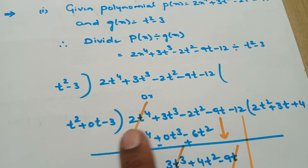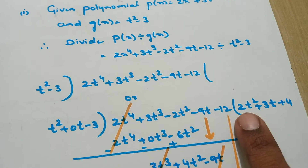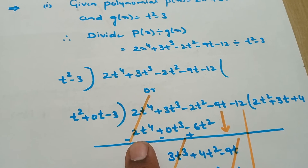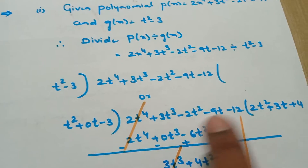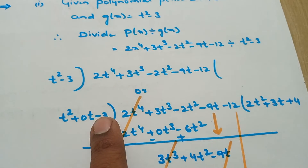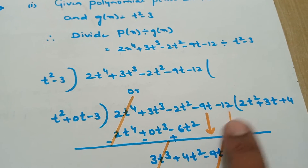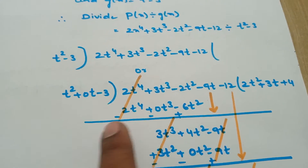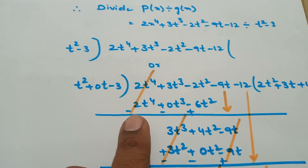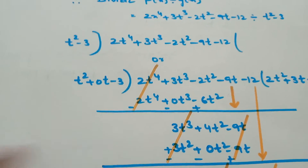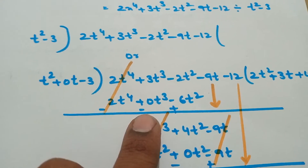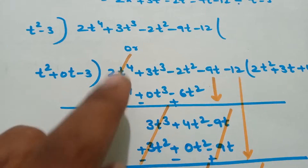For t², what we have to multiply to become 2t⁴? t² into 2t² becomes 2t⁴. Now 0t into 2t² is 0t³, and -3 into 2t² is -6t². We complete this first step. Now change the signs because we are doing subtraction, so it becomes minus, minus becomes plus. Cancel the like terms.